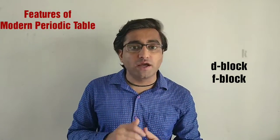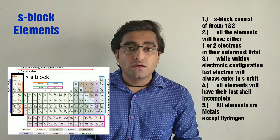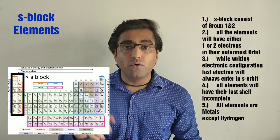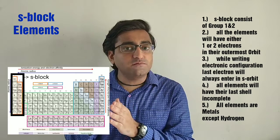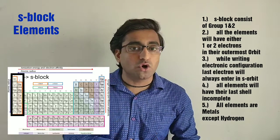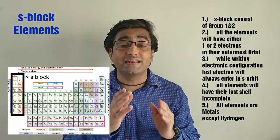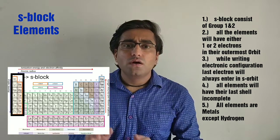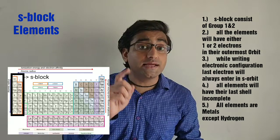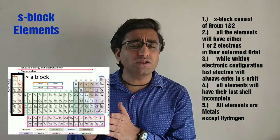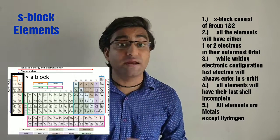Now let us learn the features of the modern periodic table. The whole modern periodic table can be divided into 4 blocks: S, P, D and F block elements. Starting with the characteristics of S block: point 1, the S block consists of group numbers 1 and 2. Point 2, all elements in the S block have either 1 or 2 electrons in their outermost orbit. Point 3, the last electron always enters the S orbit. Point 4, all S block elements have their last shell incomplete. Point 5, except hydrogen, all other elements in the S block are metals.